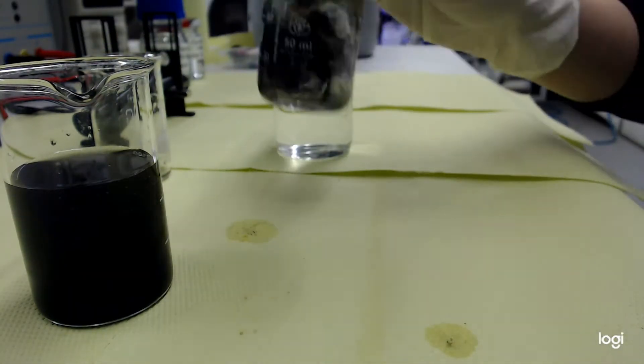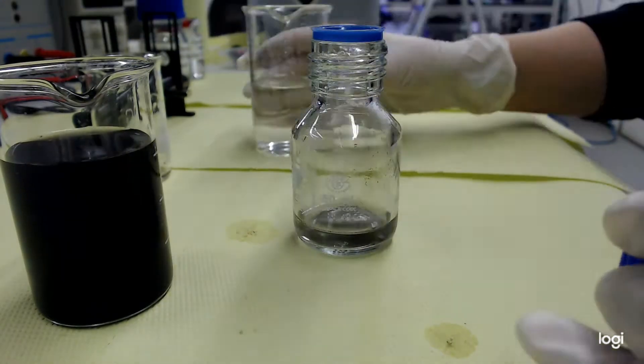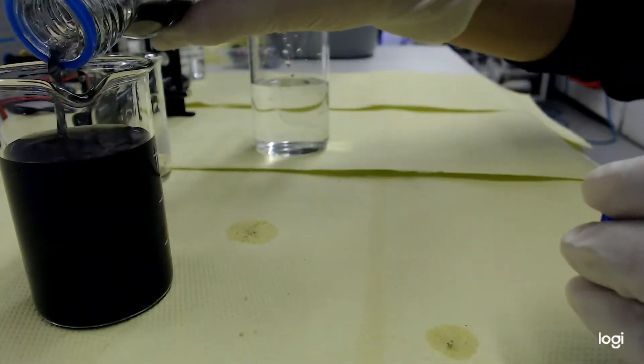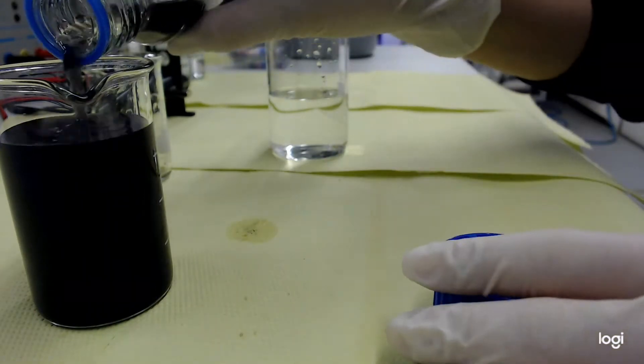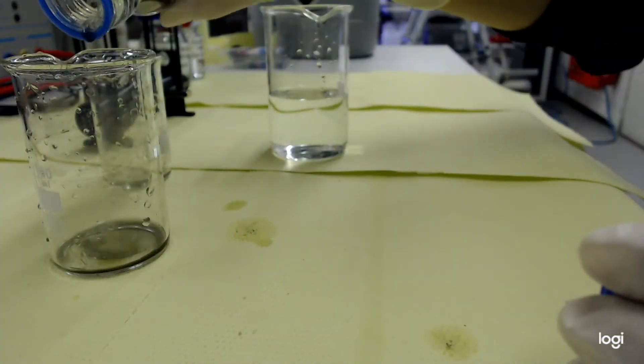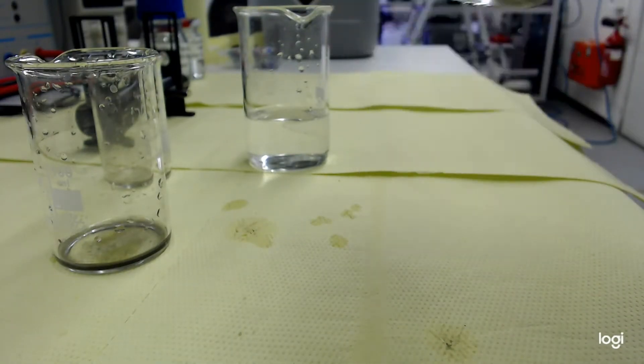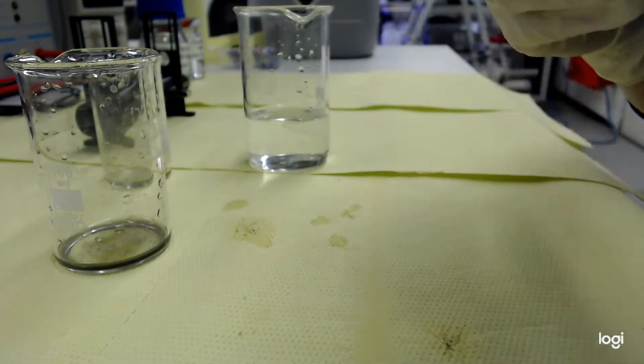From here on, the process is a literal rinse and repeat until the solution is clear, because then you know that all the excess powder and dust has been removed and the oversaturation of the Galinstan is no longer present.